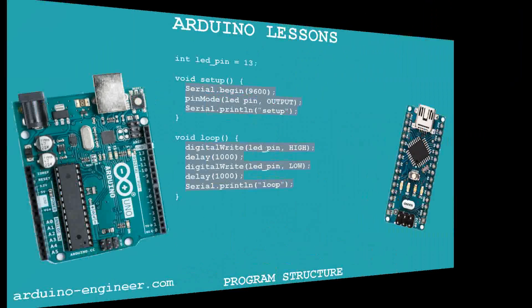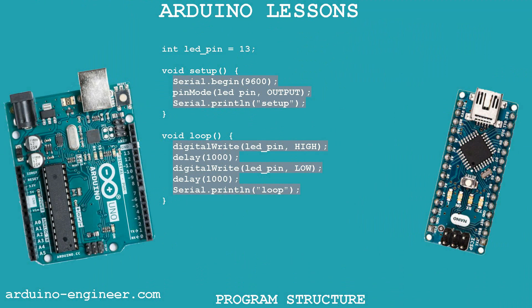Now let's consider a simple example of a program with a similar structure, with the ability to monitor its execution in the port monitor, as well as by indication using a LED on the controller board. The Arduino Nano and Uno board has a LED connected to the 13th pin, and this program can blink with it.